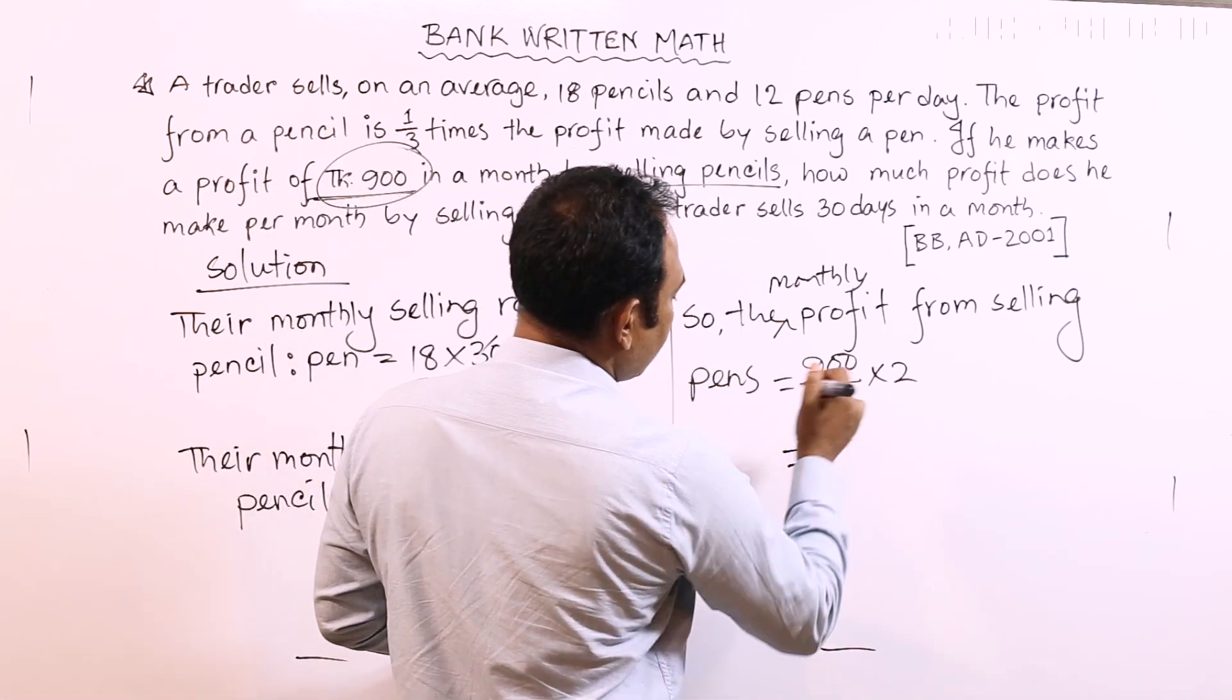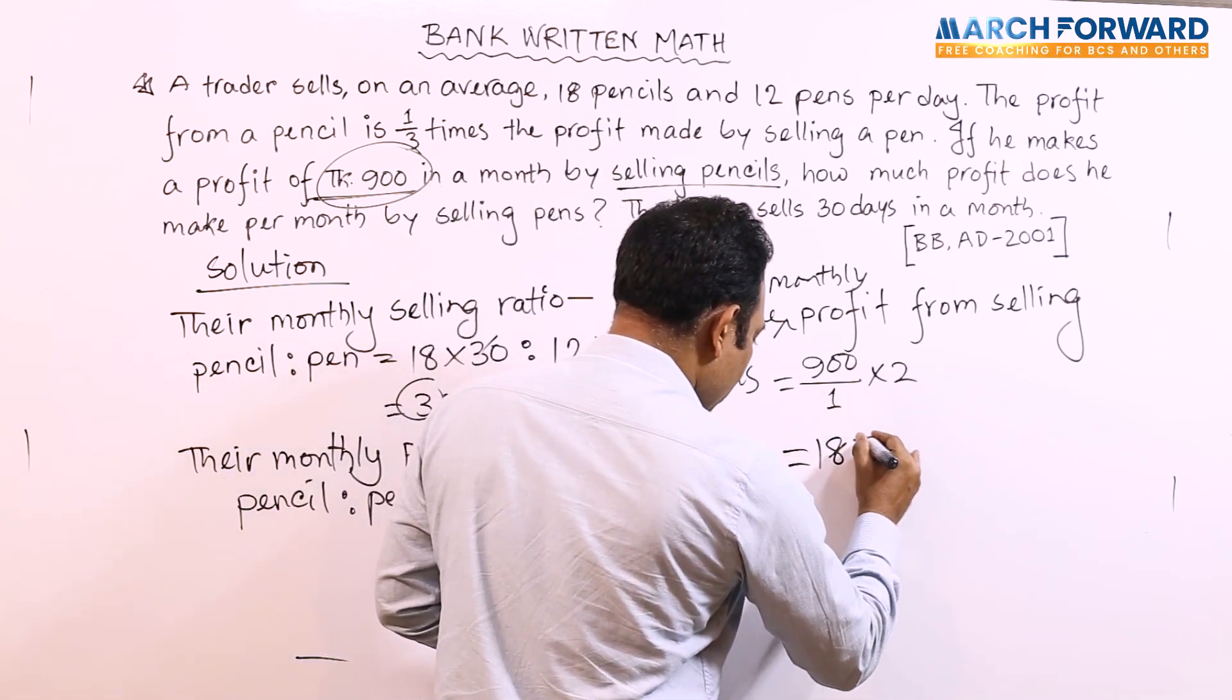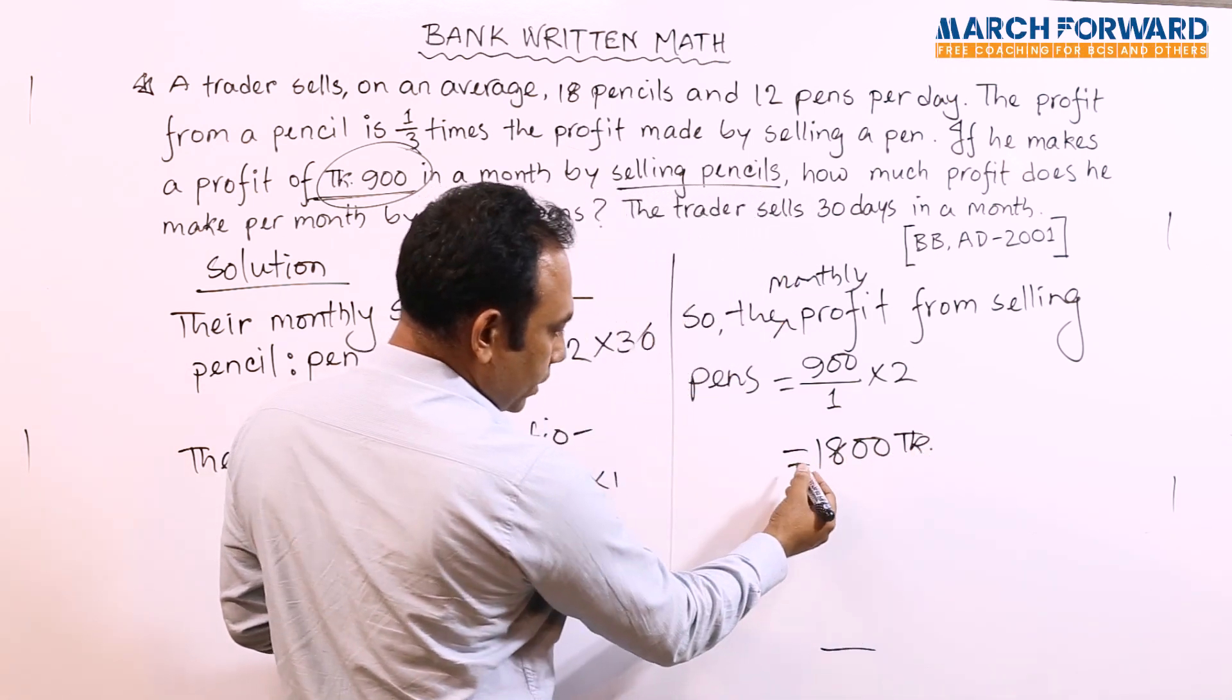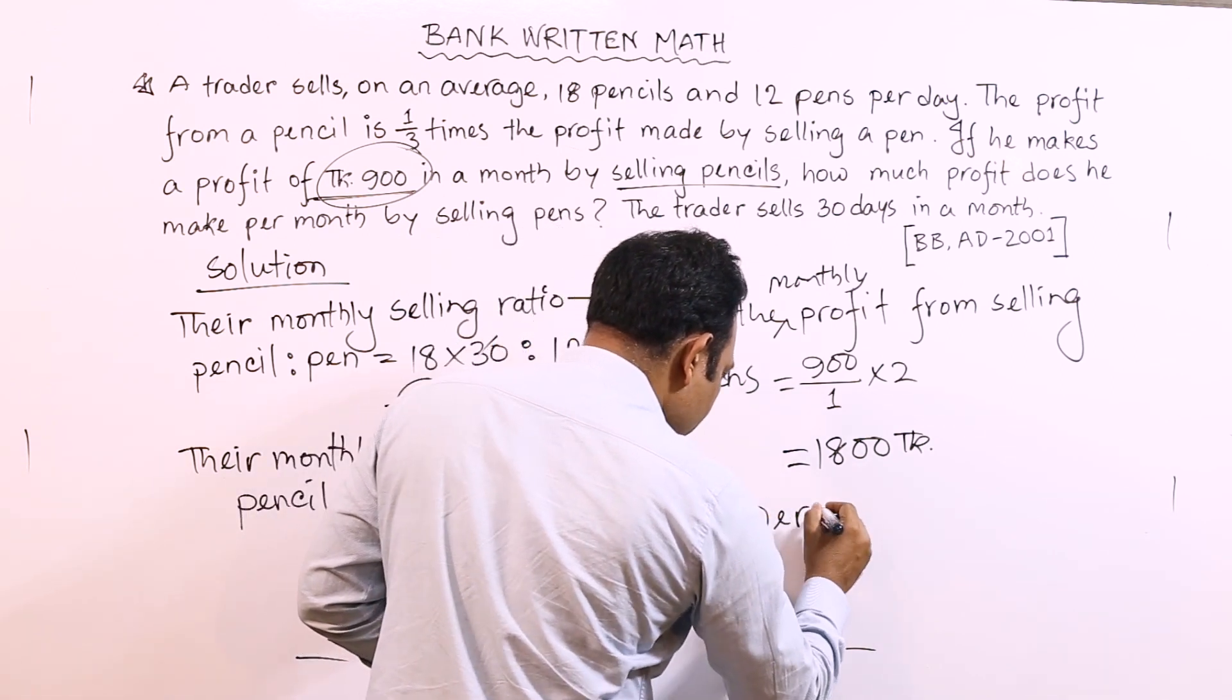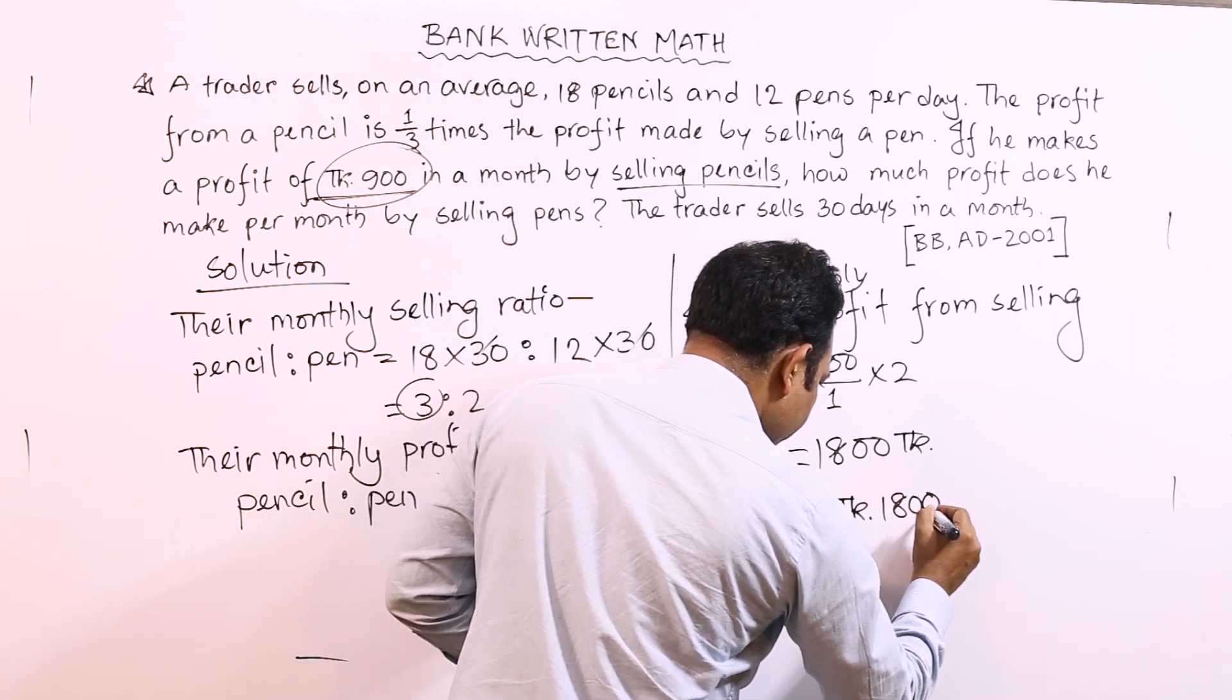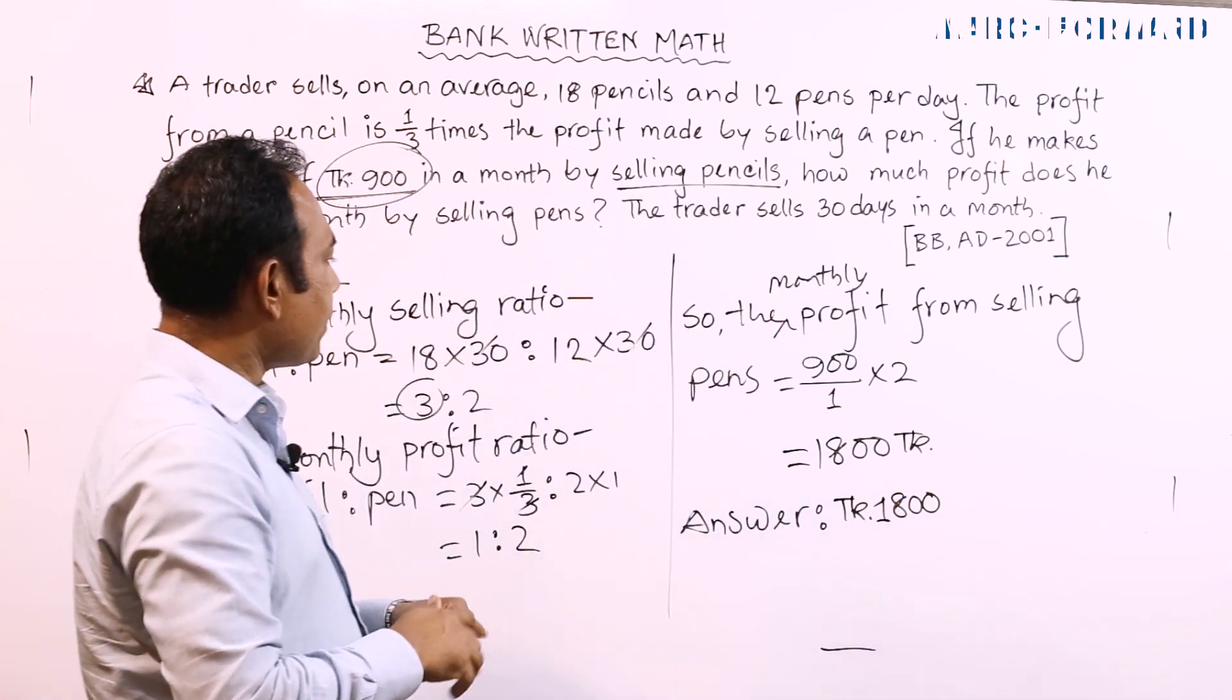So we multiply - 3 times 1 equals 9000 divided by 1, and 3 times 1 equals 18000. The answer is 18000 taka.